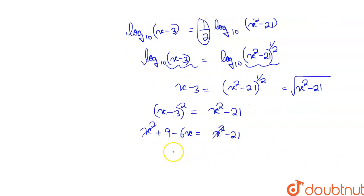So 9 plus 21 equals 6x. So 30 equals 6x. What is the value of x? We have 5. So what is our answer? 5. This is the solution guys.